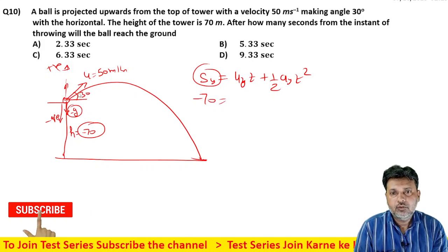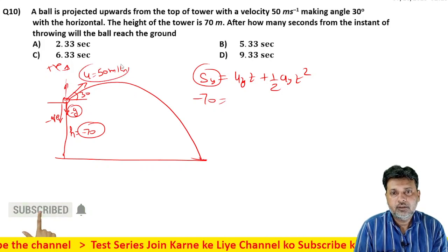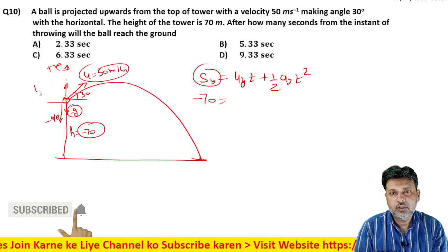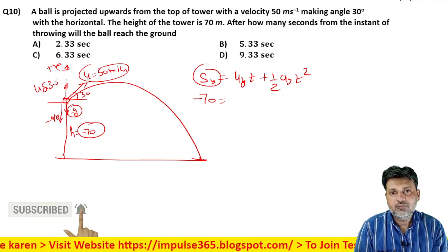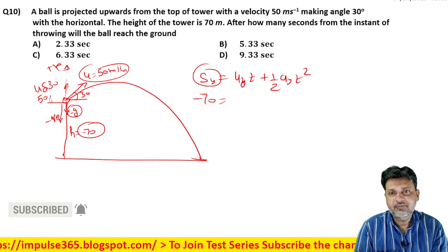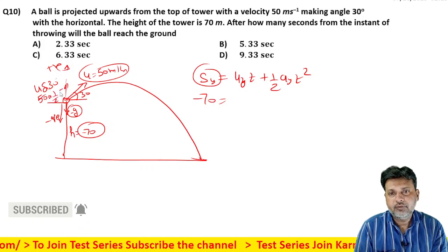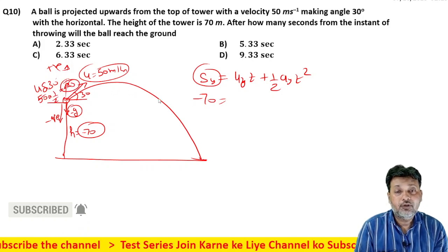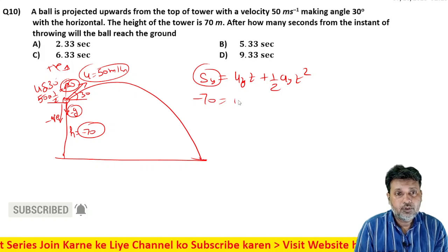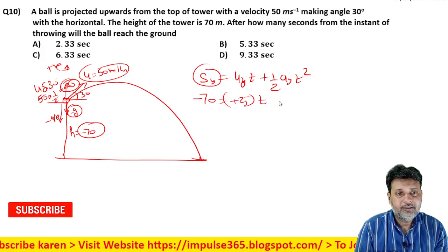uy kitna hoga? uy vertical direction me - u sine 30 degree. u ki value 50, toh 50 sin 30 ki, 1 by 2, 25. 25 aya uy ka. uy upar ka taraf hai, positive, plus 25 t. Aap ko nikalna hai time.